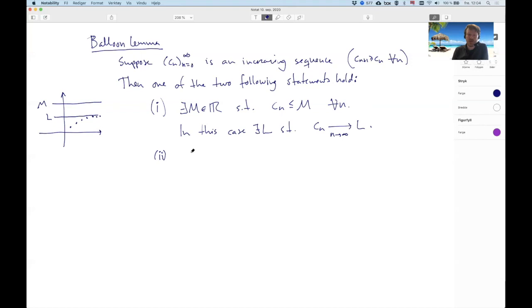But what's part two? Well, part two is there exists no m as above, so it's not bounded above. In this case, dn goes to plus infinity as n goes to infinity.